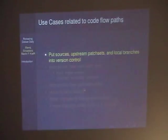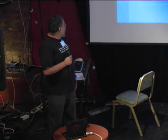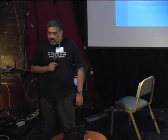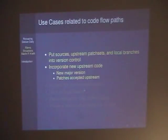Corresponding to each one of these code flow sources, there are certain use cases — things that you have to do during the course of maintaining packages. To start with, since you are talking about a version control system, you have got to take your upstream source and various different features and patches and put them in version control. Once you have done that, you have got to incorporate new upstream code as releases are made.